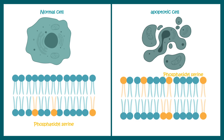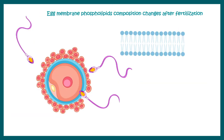Membrane phospholipid composition can also indicate cell health. In a normal cell, phosphatidylserine is present on the inner leaflet, but in apoptotic cells, phosphatidylserine flips to the outer leaflet. This flipping is a hallmark of apoptosis, demonstrating that phospholipid distribution can reveal cellular physiology. Another example is fertilization: when one sperm enters the ovum, membrane phospholipid composition changes, making the membrane more impermeable to a second sperm and preventing polyspermy.